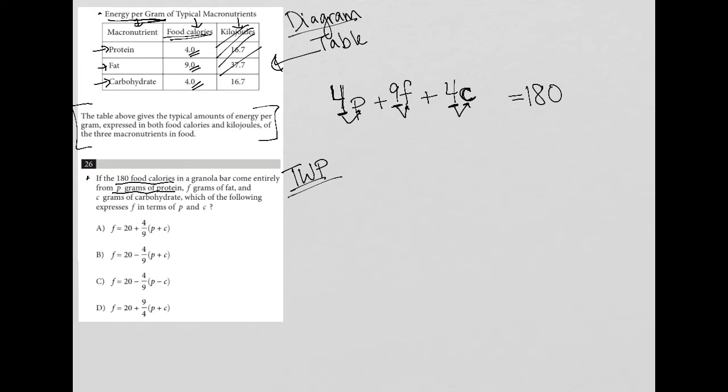So the question wants us to express F in terms of P and C. Our answer choices prove to us that all that really means is that we need to isolate F. So I'm going to just rewrite this. 4P plus 9F plus 4C equals 180.